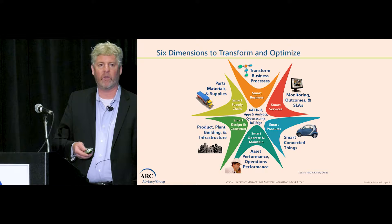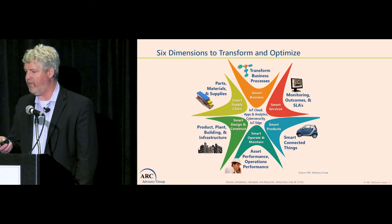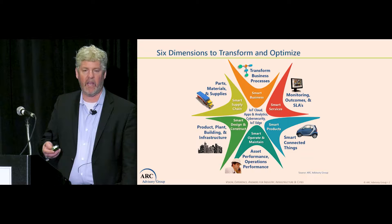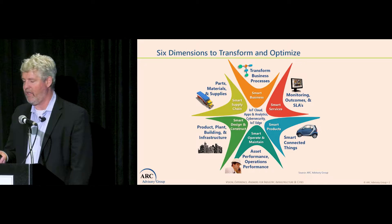All of the data related to these outcomes feeds into what we call the ARC model. We have six dimensions here, and what you'll clearly see is it's multi-dimensional in terms of what people are considering around change, transformation, supply chains, engineering, business systems, asset services, business models, and so forth.